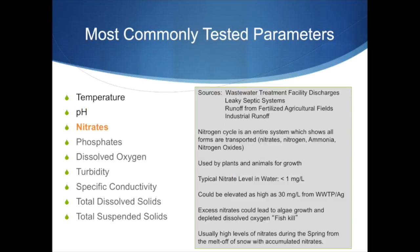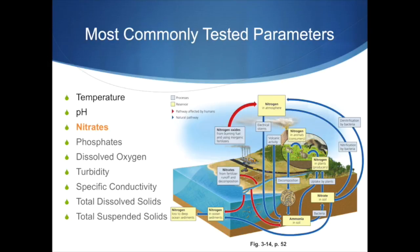Nitrates are usually residues that come from waste, water treatment facility discharge, leaky septic systems, runoff from fertilized agricultural fields, and industrial runoff. It's important to understand that nitrates are measured because excess nitrates could lead to algae growth and depleted dissolved oxygen, which will kill fish or any other living organisms in the water that require oxygen. Here is the nitrates cycle — feel free to pause the video to see the cycle and understand it better.